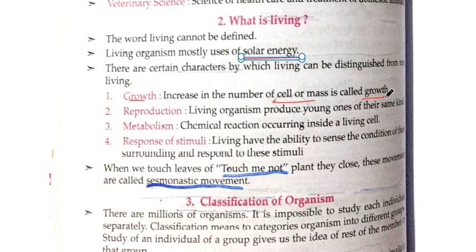Growth is only shown by living beings. The second property is reproduction. Living organisms produce young ones of their same kind. Almost all living beings show reproduction; otherwise it is difficult to survive.